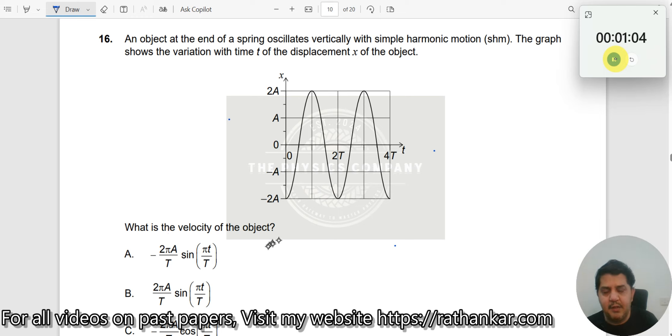What is the velocity of the object? He is asking about the velocity of the object. Now as you see here, this is your amplitude. Amplitude here is 2a upwards and downwards the amplitude is minus 2a. So therefore your amplitude a dash is equal to 2a and what kind of equation is this?